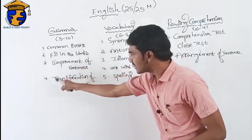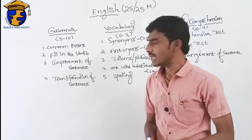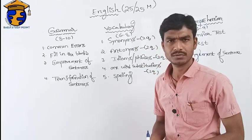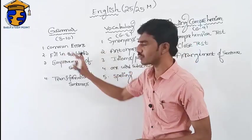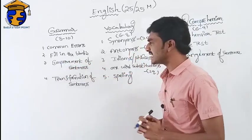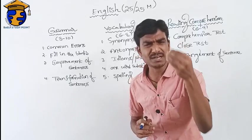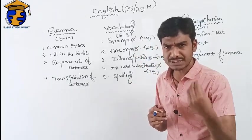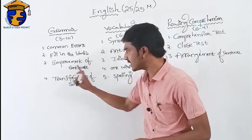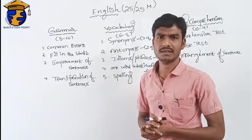Let's explain the grammar question types mapped to chapters. For fill in the blanks, you need to know tense well. For improvement of sentence, you need to know tense, parts of speech, and the verb. First of all — where is the subject, where is the verb, and where is the object? For transformation of sentence, it's simple, complex, and compound.